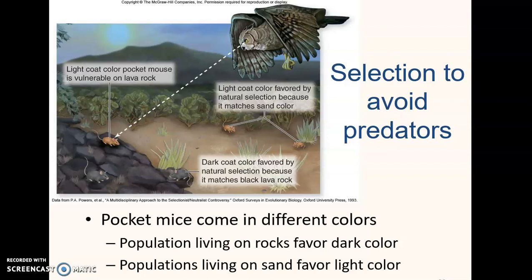In the American Southwest, there are ancient lava flows that produce black volcanic rock, which contrasts markedly with the light-colored sand around it. A lot of animals, including pocket mice, have evolved different coat colors depending on where they live. Populations living on the dark rocks favor a darker color.